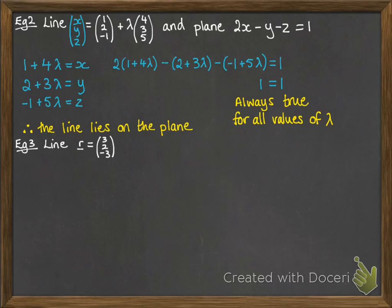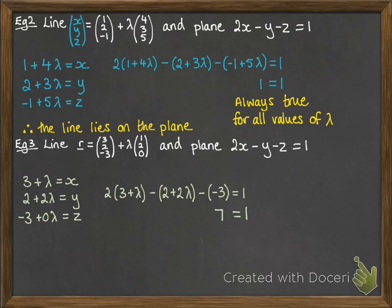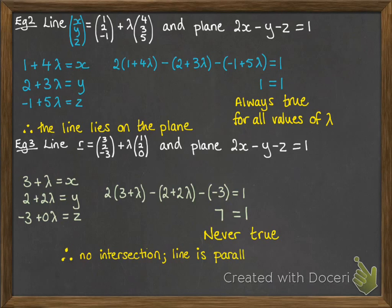In our third example, same again — we're going to set out our equations for x, y, and z from the equation of the line and put them into the equation of the plane. This time, when we simplify, we get 7 equals 1. Of course, that can never be true for any value of lambda, so there is no solution to that equation. There's no intersection, which means that the line is parallel to the plane.